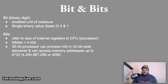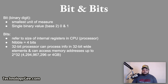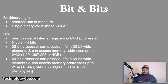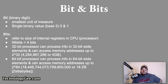A 32-bit processor can process information in 32-bit wide elements and can also access memory addresses up to 2 to the 32nd power, which comes out to 4 gigabytes. A 64-bit processor can process information in 64-bit wide elements and can access memory addresses up to 2 to the 64th power bytes, or 18 zettabytes.